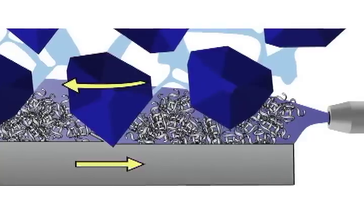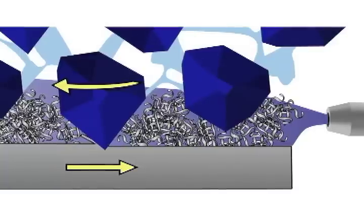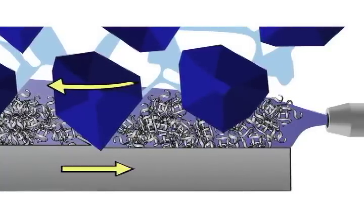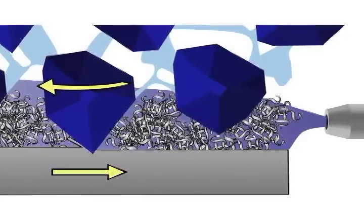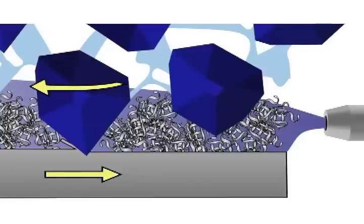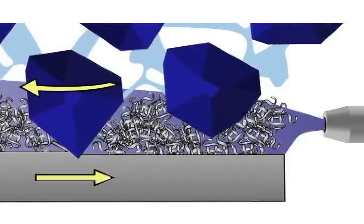However, if when that hot sticky chip comes flying off of the workpiece, it's surrounded by a bunch of cold coolant, the cold coolant quenches that hot sticky chip and the hot sticky chip transforms from being hot and sticky to being cold and brittle.